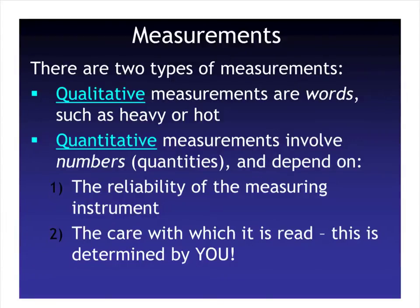With measurements, we're going to have two types. In science, we're going to have qualitative measurements, which are words such as heavy or hot, or maybe using colors or identifying there are several or a few. And then we've got quantitative measurements, which are going to involve numbers. Quantitative sounds like quantities, and they're going to depend on the reliability of the measuring instrument and the care with which it is read. So we want to make sure that when we are doing measurements in lab, we are being very careful and accurate.